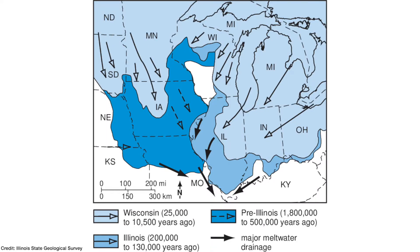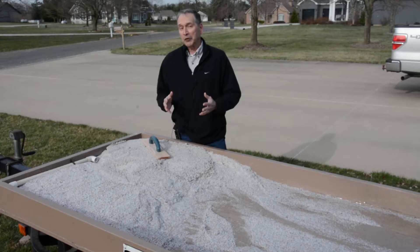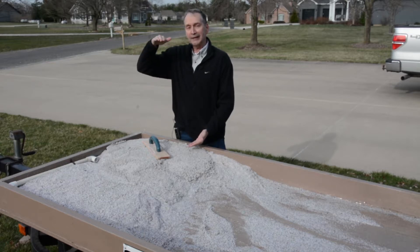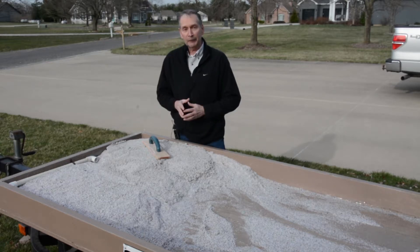In fact, if you would have been living here 18,000 years ago, depending on where you were in Illinois, you may have been standing on up to 1,000 feet of ice. To give you an idea of how tall that is, next time you're outside find the tallest tree you can find, then imagine about 30 of those trees standing on top of each other — that would be about a thousand feet.